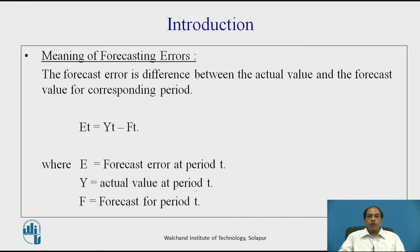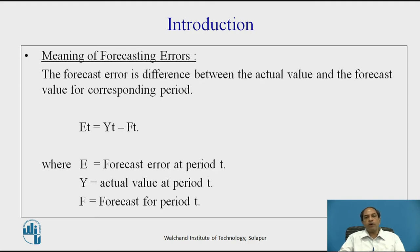What is a forecasting error? We try to forecast using a variety of methods — maybe the Delphi technique, maybe a statistical technique, or even some of the latest software. We try to find out from past data what the projected figure will be for future data. Once actual data comes into reality, we compare the forecasted value versus the actual value, and we see that there will be some difference. That difference is known as the error.